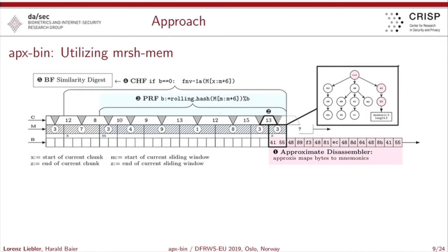We process those buffers using a pseudorandom function, which defines the chunk boundaries. We put the input sequences into the pseudorandom function, previously define a fixed modulus, and if the modulus is triggered, we define the chunk boundary. The chunk is afterwards hashed with the chunk hash function and saved into a similarity digest. In the case of MRSH-v2, we normally use bloom filters for this task.